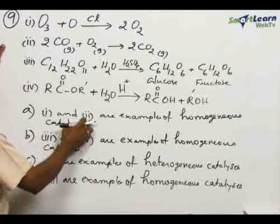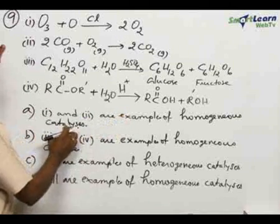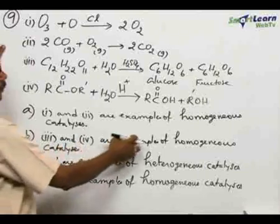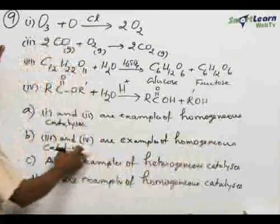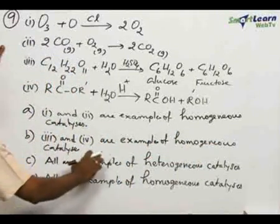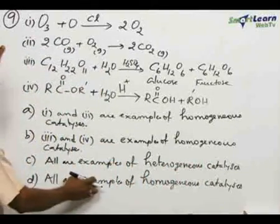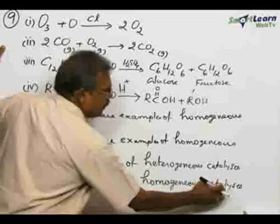The options are: A) 1 and 2 are examples of homogeneous catalysis, B) 3 and 4 are examples of homogeneous catalysis, C) all are examples of heterogeneous catalysis, and D) all are examples of homogeneous catalysis.